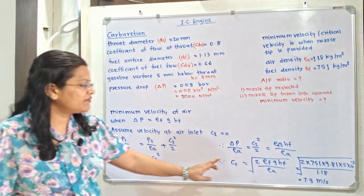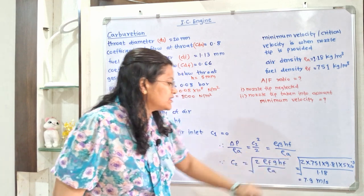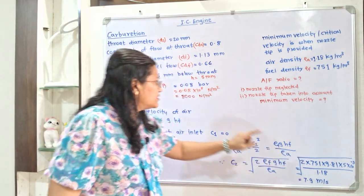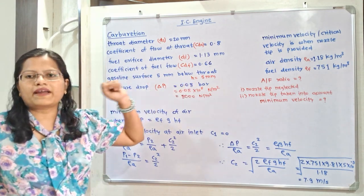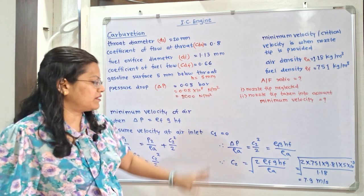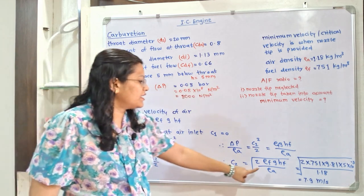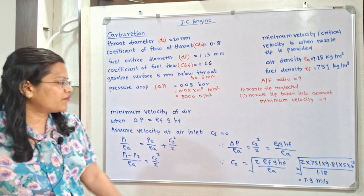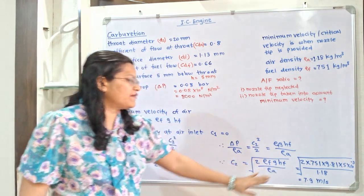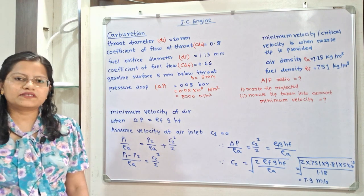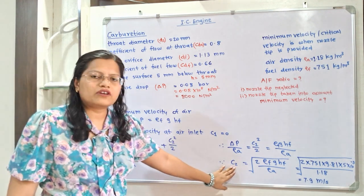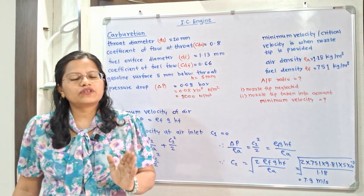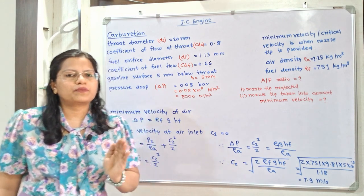Substituting values: ρF = 751, g = 9.81, HF = 5 × 10⁻³ m, ρA = 1.18. Calculating C2 = √(2 × 751 × 9.81 × 5 × 10⁻³ / 1.18) = 7.9 m/s. This is the minimum or critical velocity at the venturi throat required to start fuel flow.